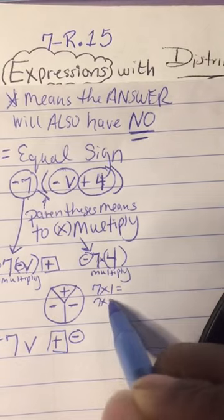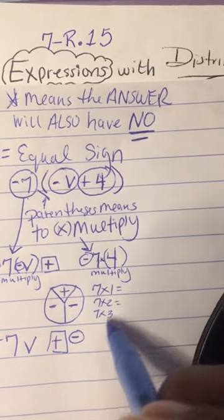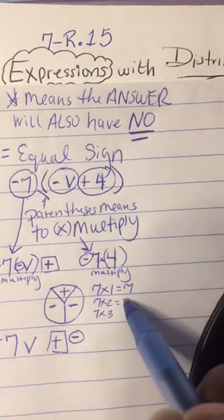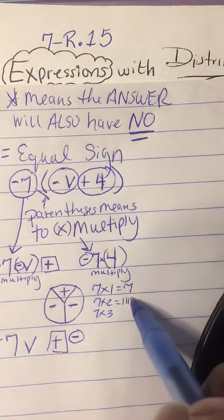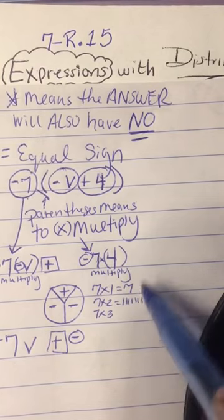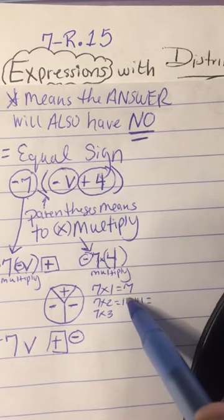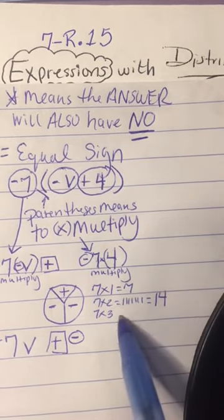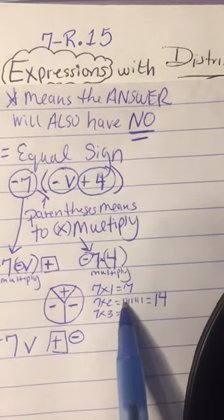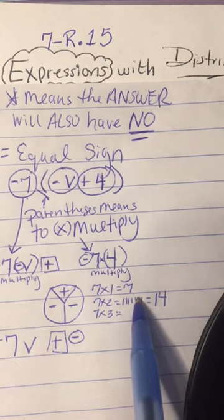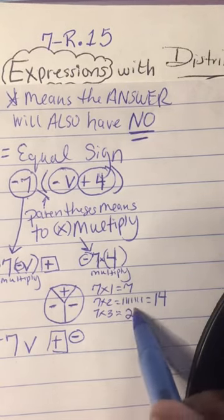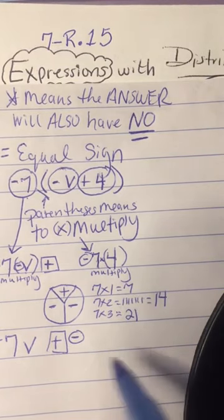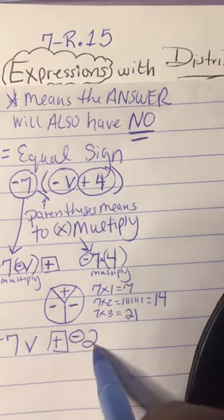7 times 4. 7 times 1, 7 times 2, 7 times 3, and 7 times 4. You can just draw 7 little lines: 1, 2, 3, 4, 5, 6, 7. So 7, 8, 9, 10, 11, 12, 13, 14... [continues counting]... 26, 27, 28. So 7 times 4 is 28.